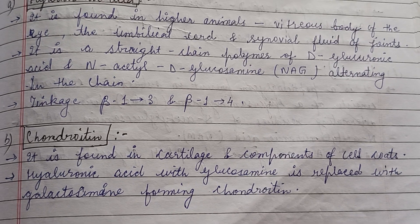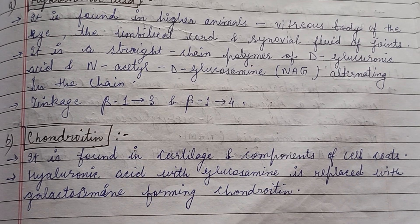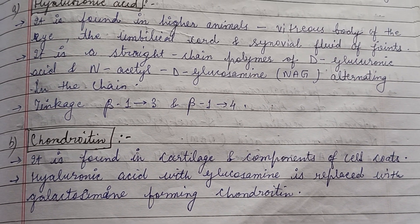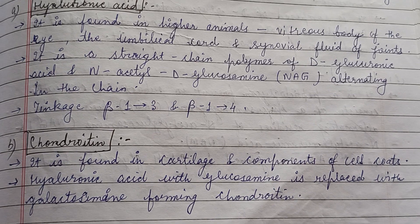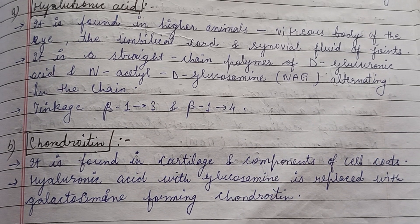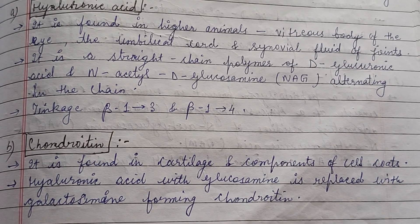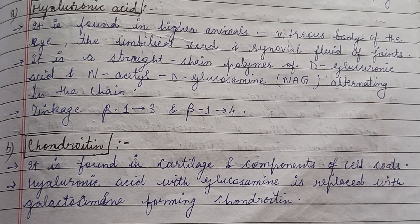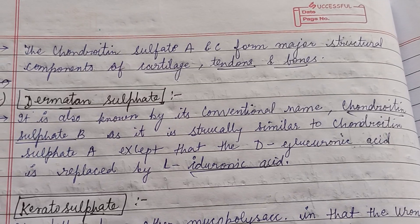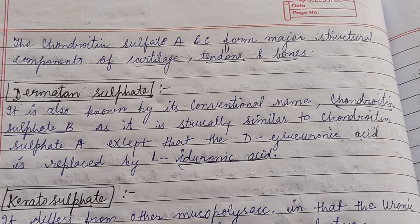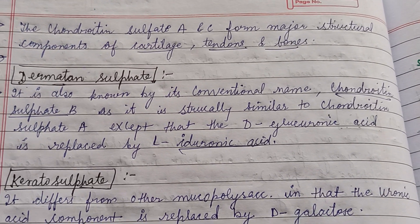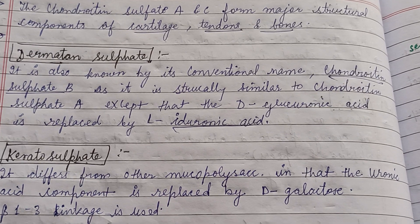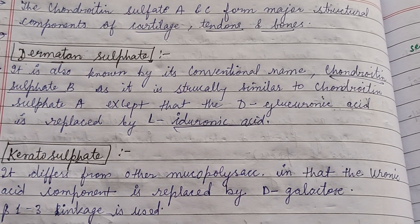Chondroitin is found in cartilage and components of cell coats. It is similar in structure to hyaluronic acid, but the difference is that D-glucosamine is replaced by D-galactosamine to form chondroitin.